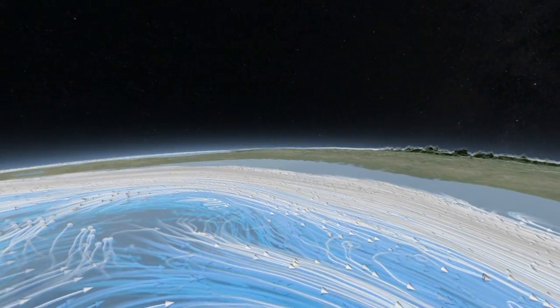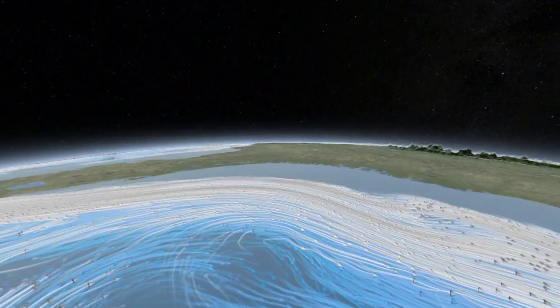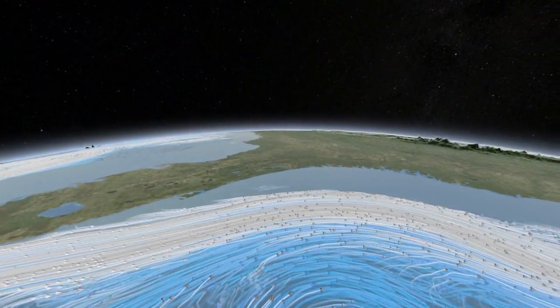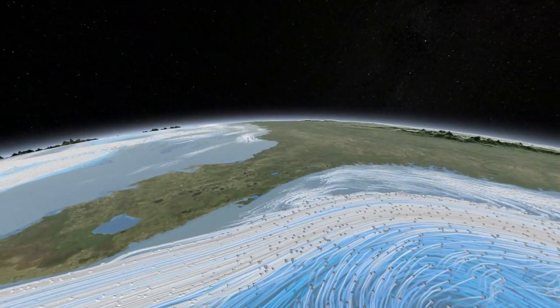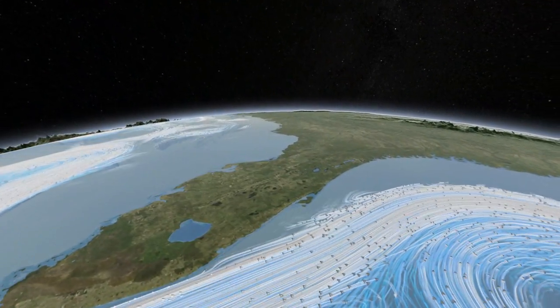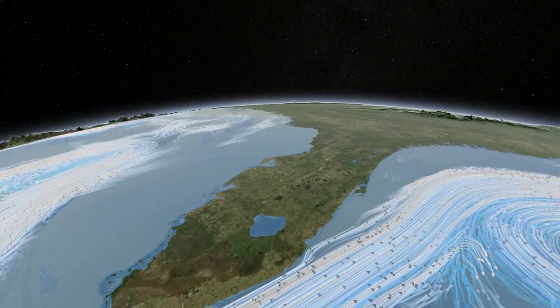Earth's climate engine has countless moving parts: tides and terrain, crosswinds and currents, all working to equalize temperatures around the globe.